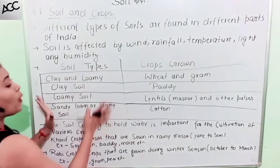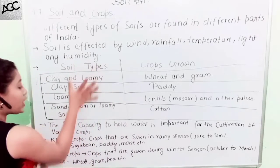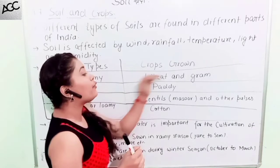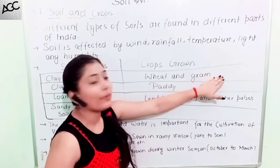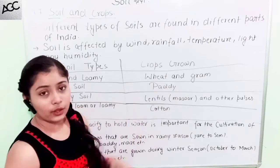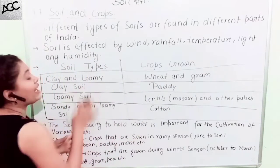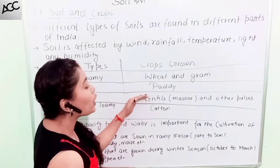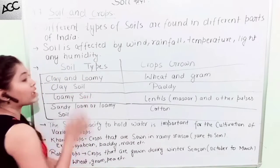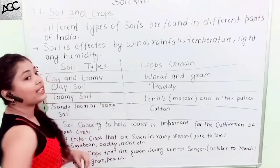Soil types are summarized so that you can remember them easily. Soil types determine crop types. For wheat or cropping, we need clay and loam soil — clay soil is very fertile. For lentils, we need loam soil. Loam soil is also very fertile.